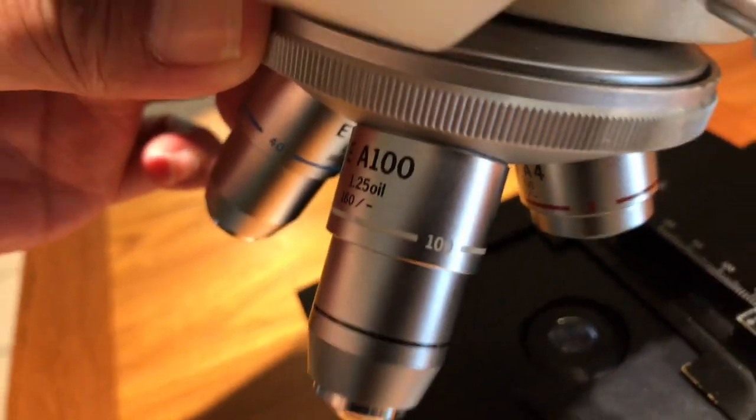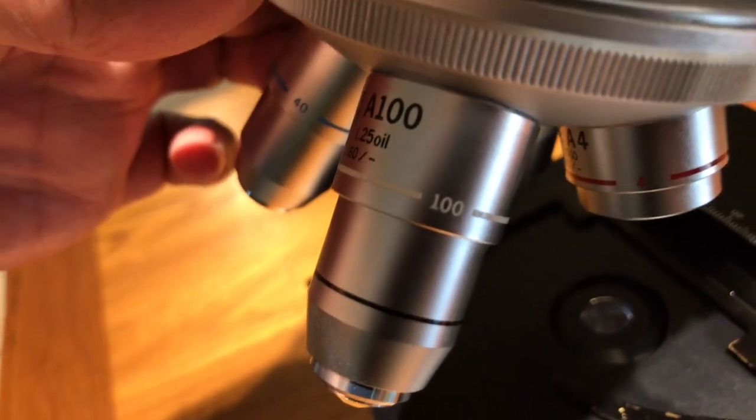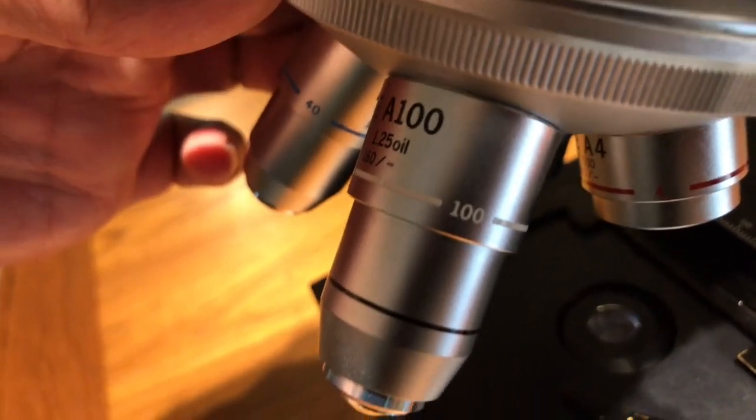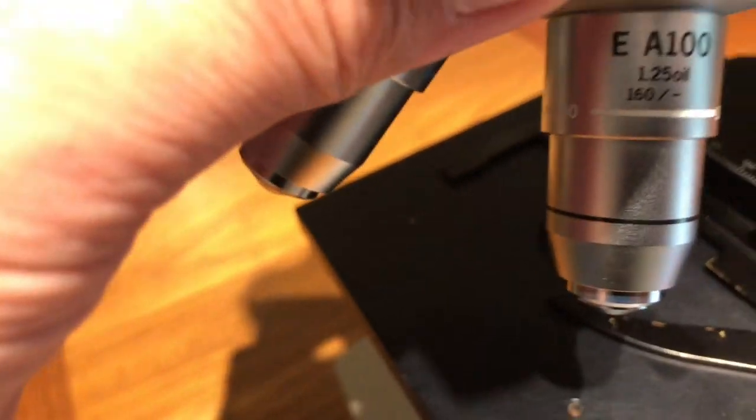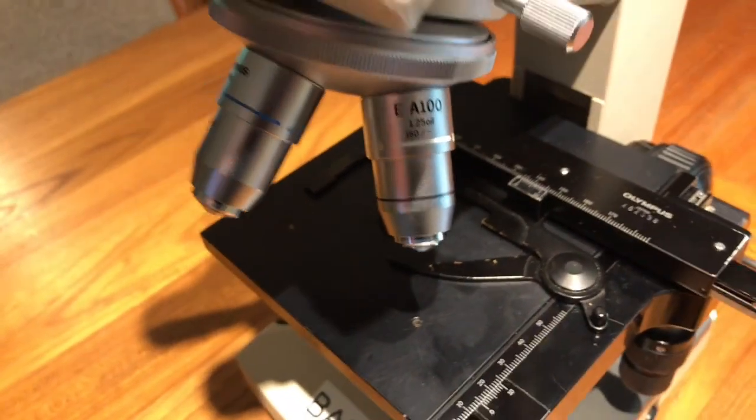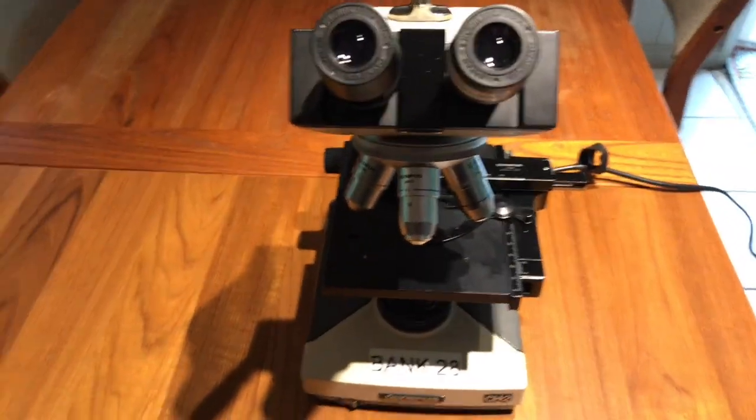I'm doing this because it's good practice for you to learn how to find these labels, so that you know what the magnification of the objectives and the eyepieces are when you are working with a microscope that's new to you.